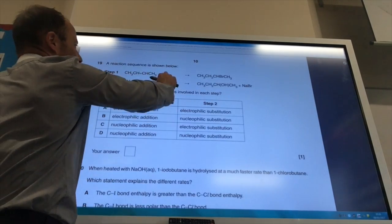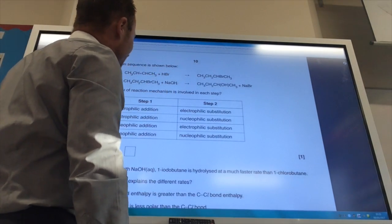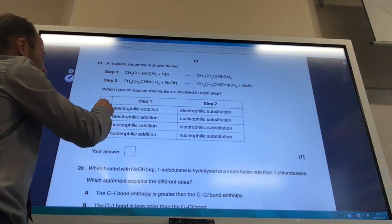For step two, I've got a hydroxyl ion replacing a bromide ion. That is nucleophilic substitution. So the answer is B.